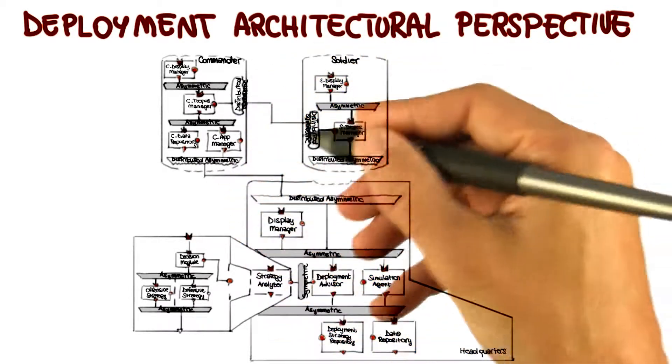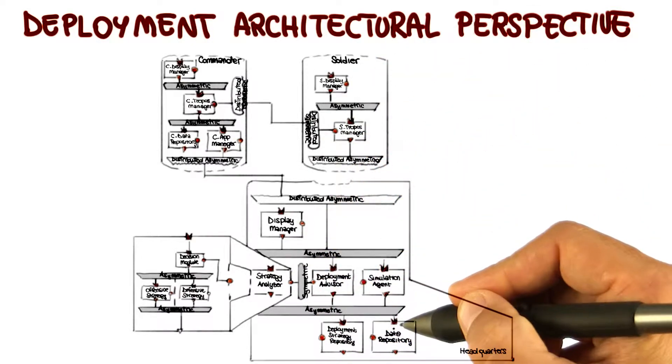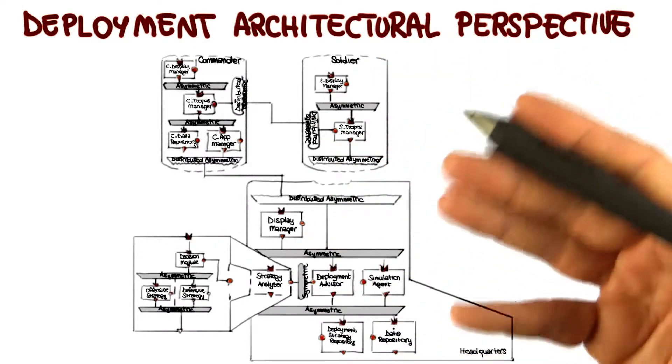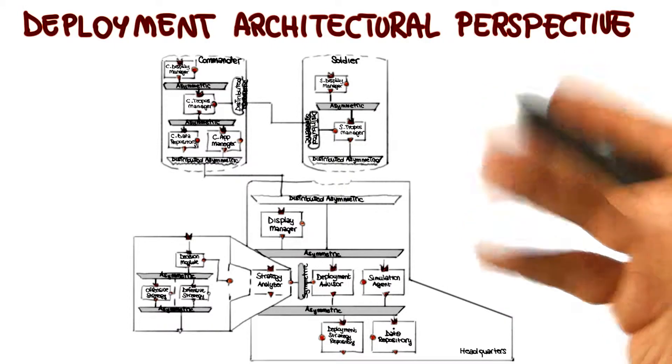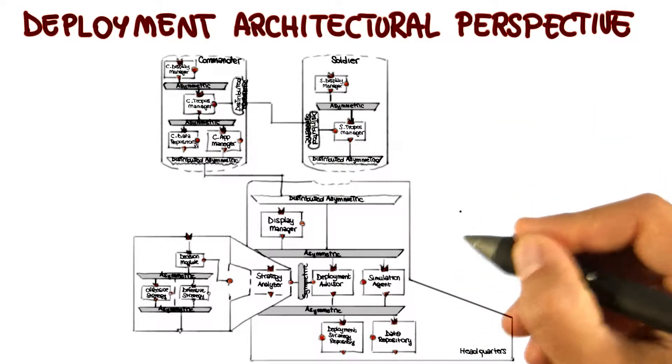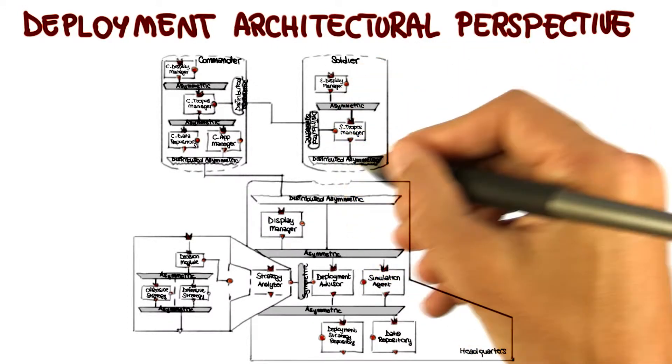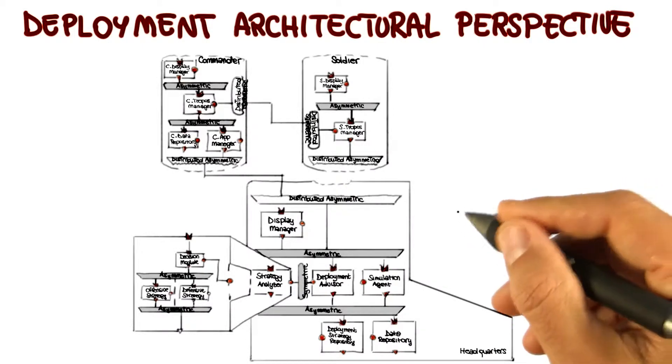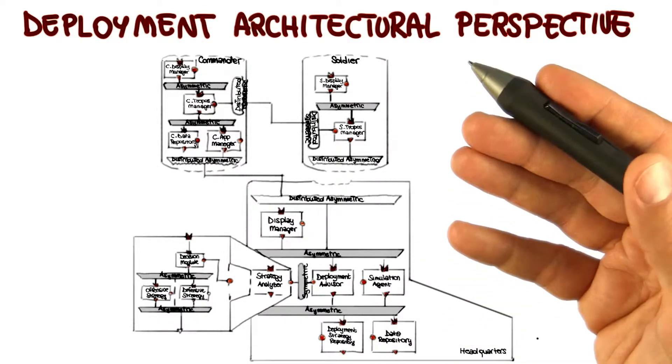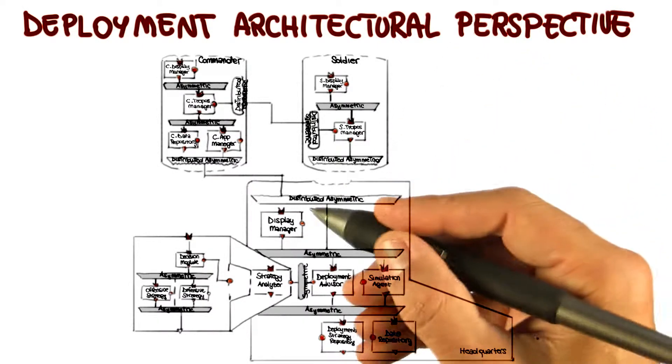For instance, using a deployment view like this one and knowing the characteristics of the hardware devices, one might be able to assess the system in terms of available memory. Is there going to be enough memory available to run the system, for example, on this device? Power consumption. Is the power consumption profile going to be larger than what the device can handle?